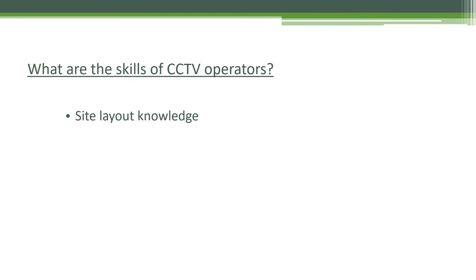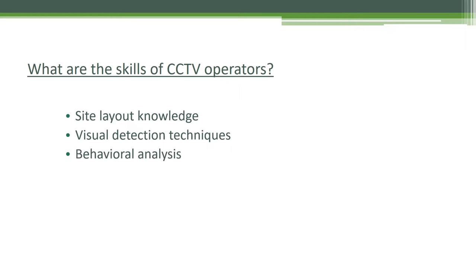The skills of a CCTV operator are: number one, site layout knowledge — the CCTV operator must have complete knowledge of the site where he or she is working. Number two, visual detection technique — you must know how to detect unusual activities. Number three, behavioral analysis — you must have the skill to analyze people's behavior.